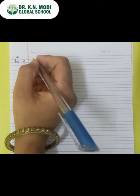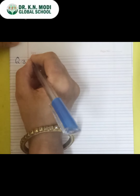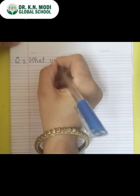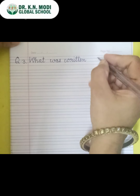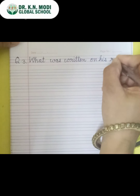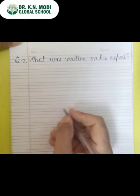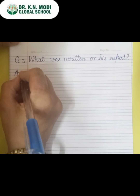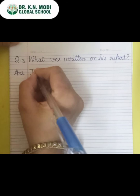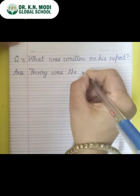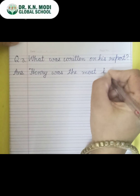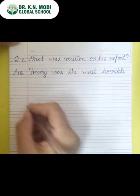Now come to the next page. This is your last question. Write down question number 3: What was written on his report? His refers to Henry — uski report ke upar kya likha hoa tha. The answer is: Henry was the most horrible boy.